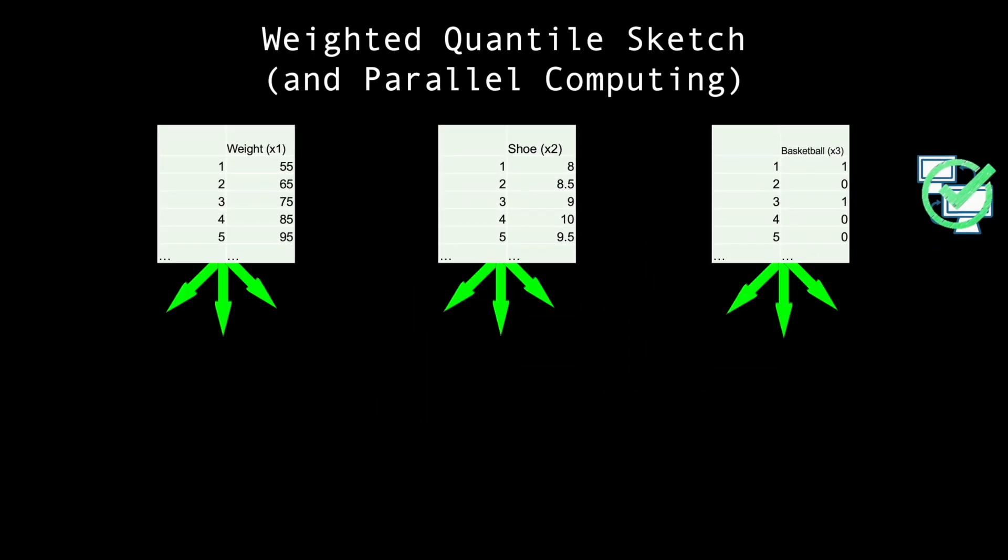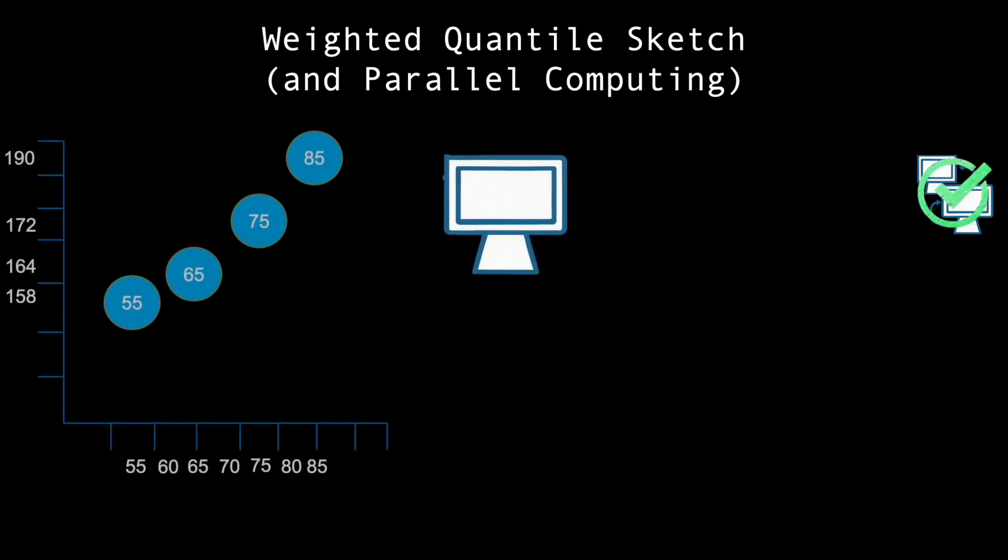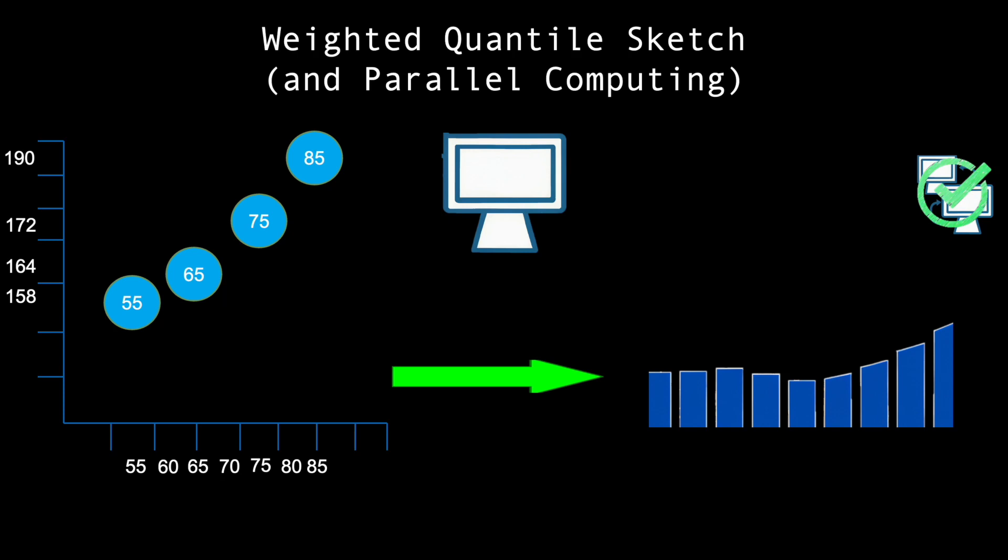The datasets are split up and data points are then distributed to several other computers. Each computer then calculates an exact quantile summary of its allocated data sample. This circumvents the memory issues we were experiencing earlier.